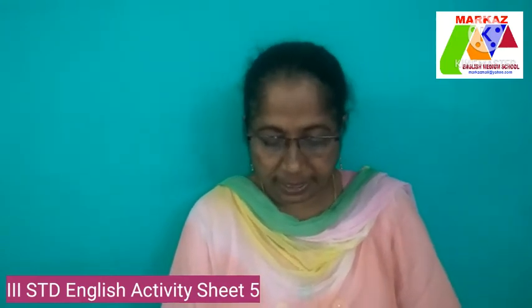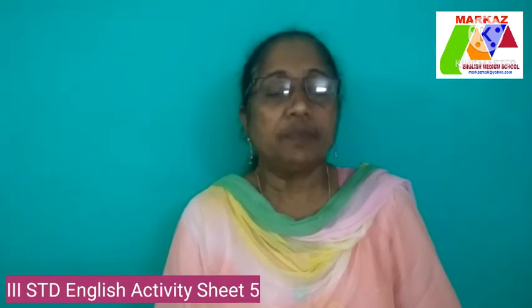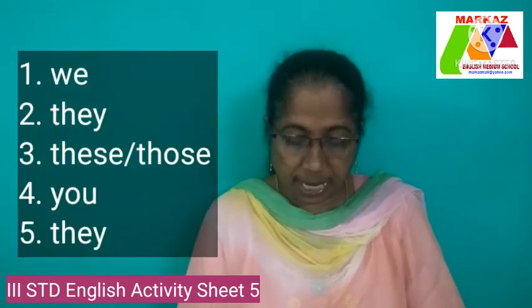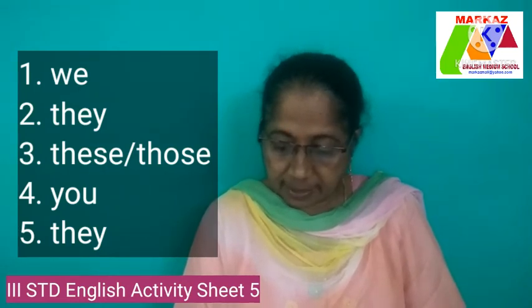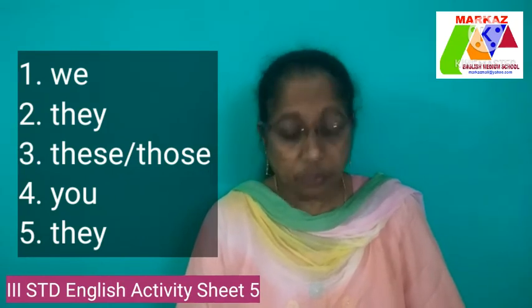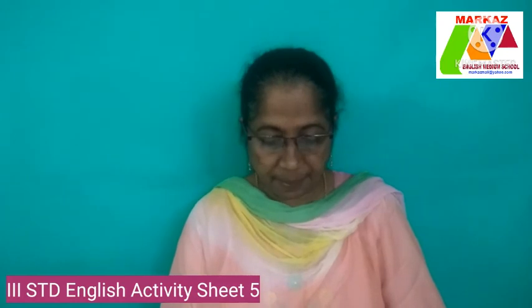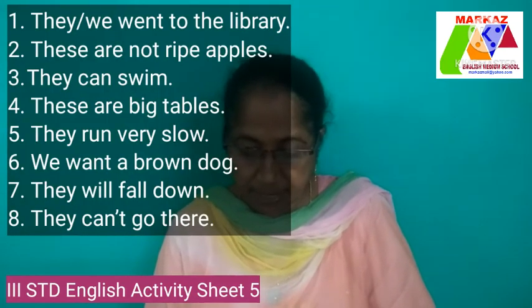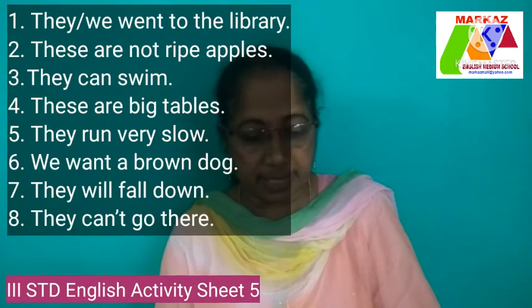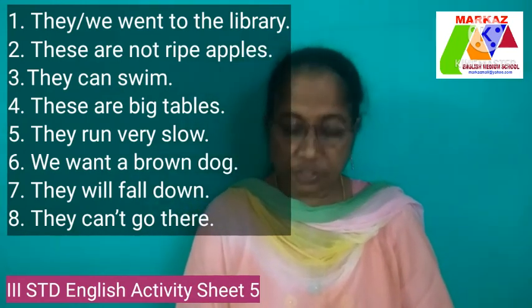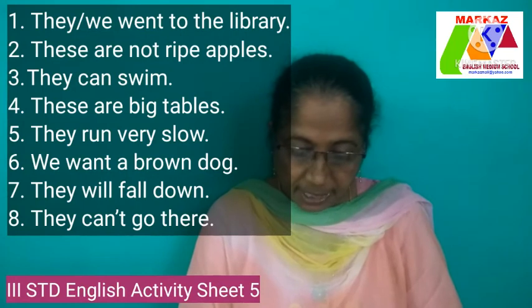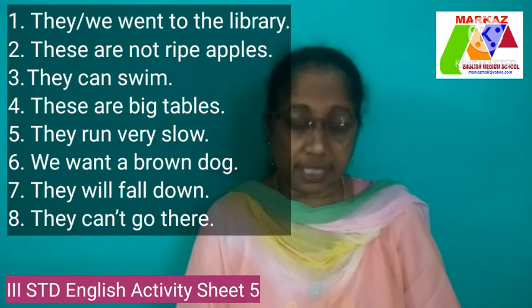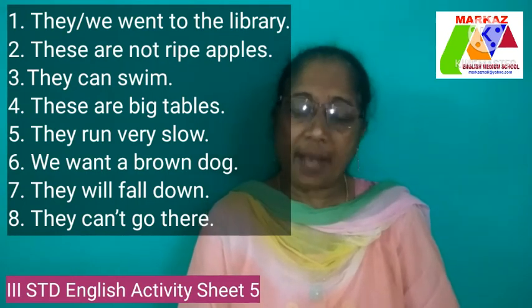For example: 'You are a good boy' — singular; 'You are good boys' — plural. Now exercise A: write the plural of these pronouns — I becomes we, he becomes they, it becomes these or those, she becomes they, you stays you. Exercise B: pick out the pronouns, change them from singular to plural, and rewrite the sentences. One: 'I went to the library' becomes 'They went to the library.' Two: 'It is not a ripe apple' — the pronoun is 'it'; plural: 'These or those are not ripe apples.'